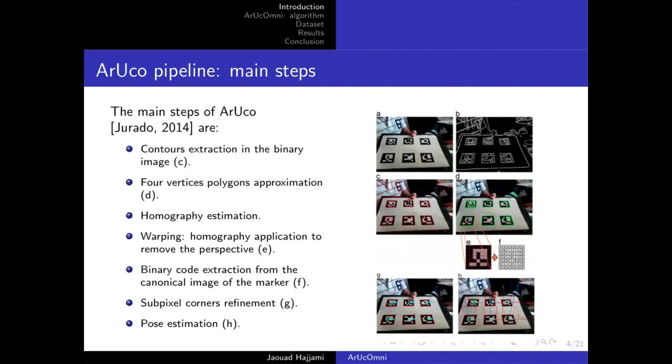The next step is homography estimation and application to remove the perspective of the marker by estimating the homography that allows us to extract the binary code of the marker for its identification. Once the marker has been identified, the corner refinements and pose estimation are performed.